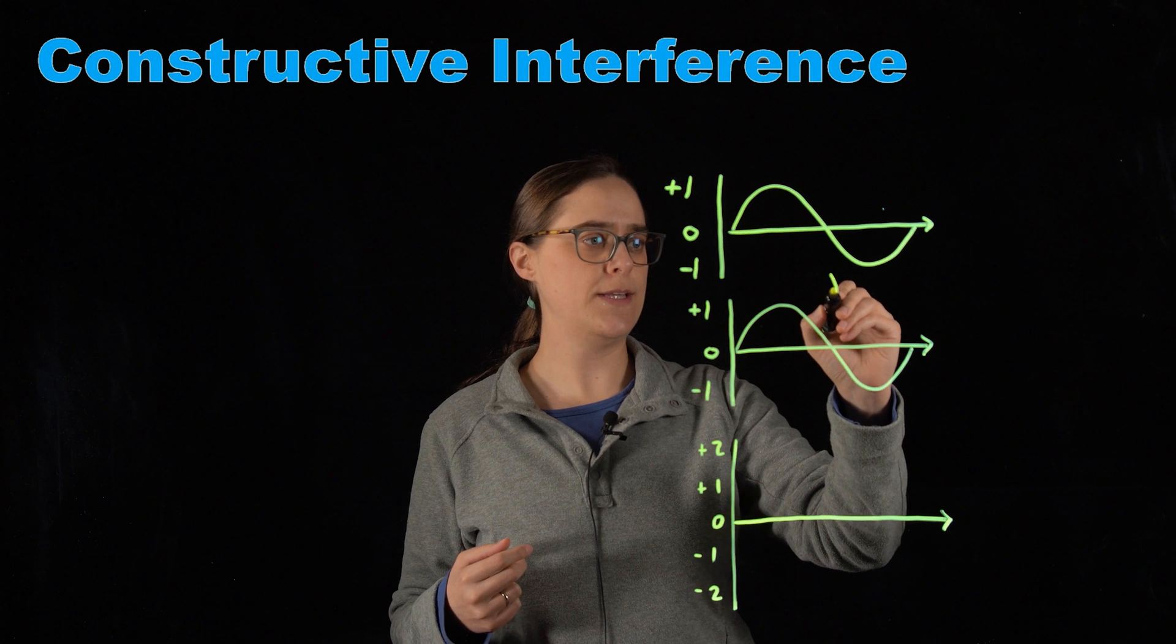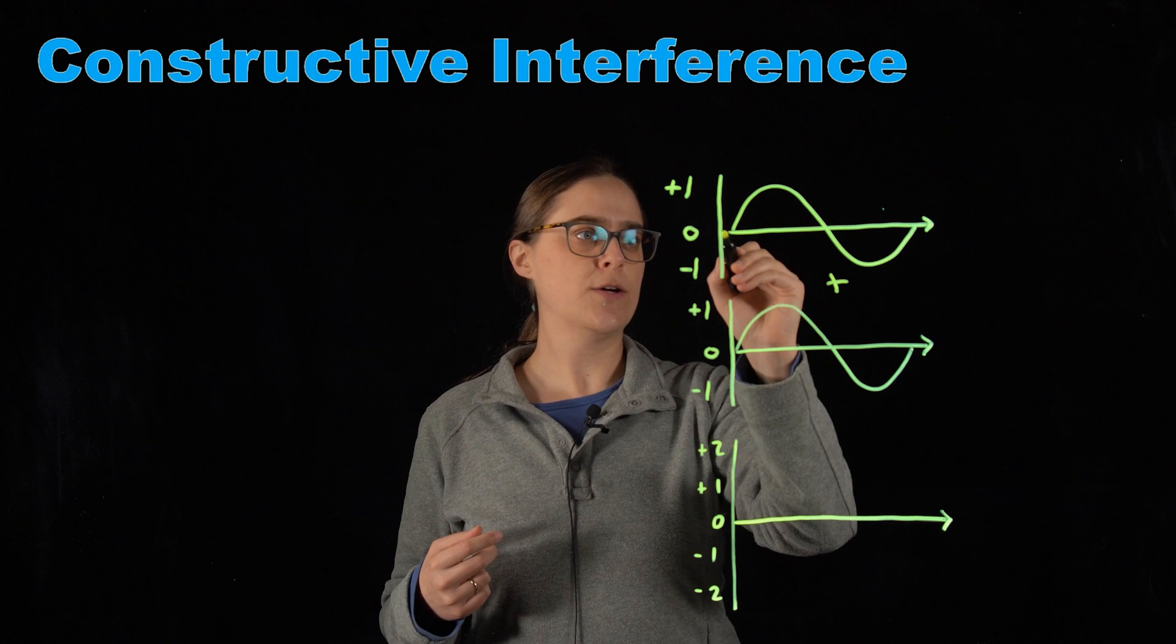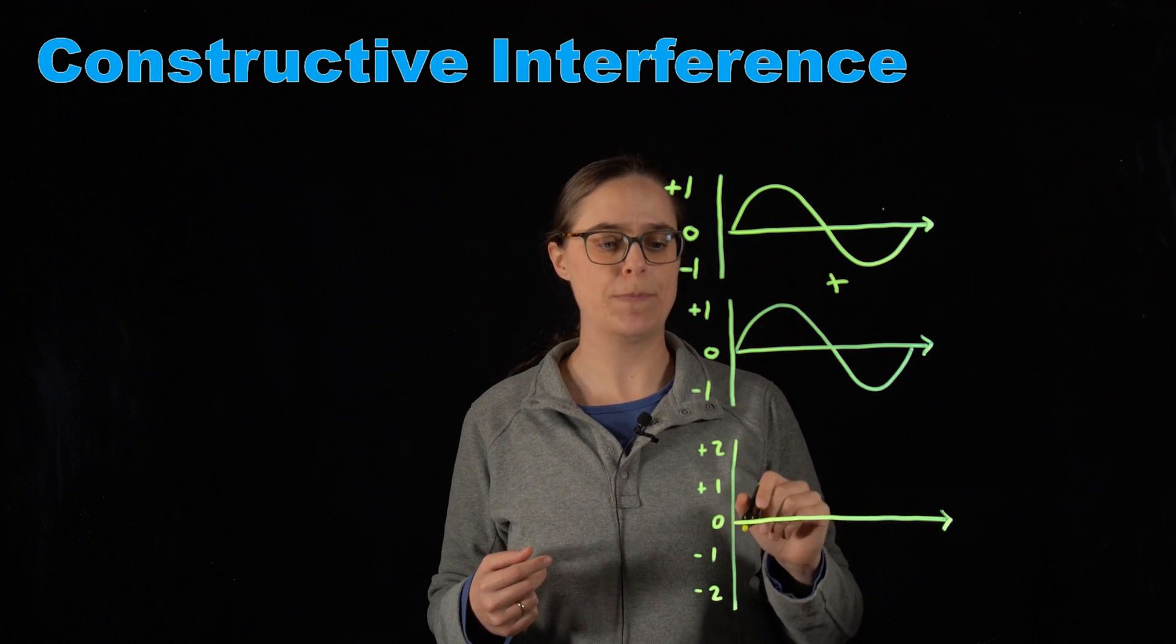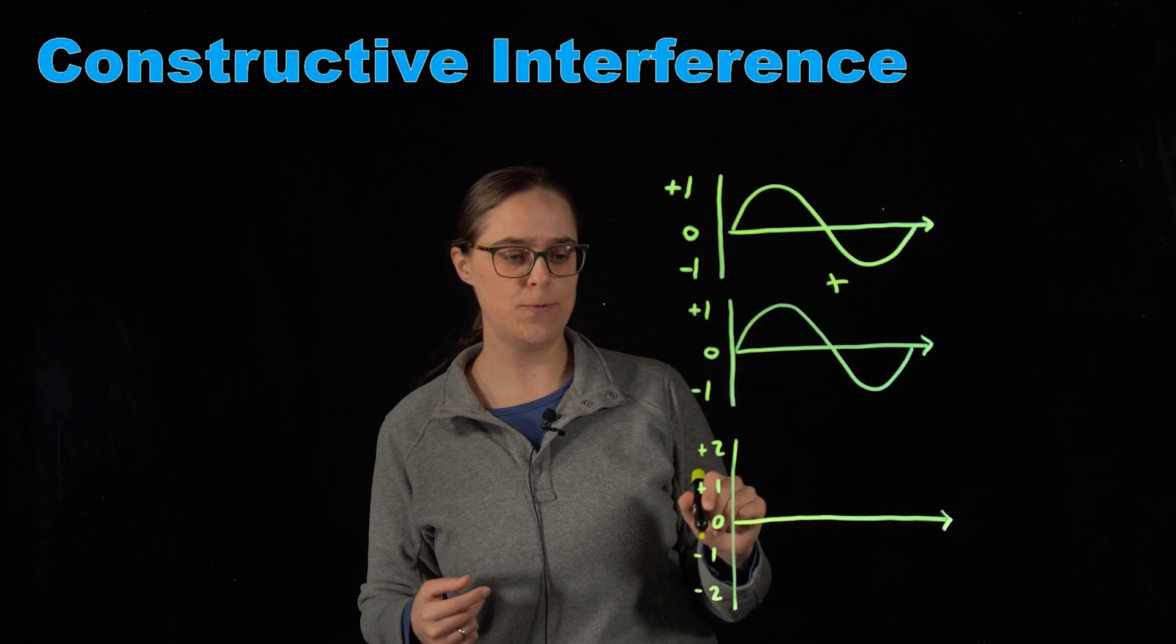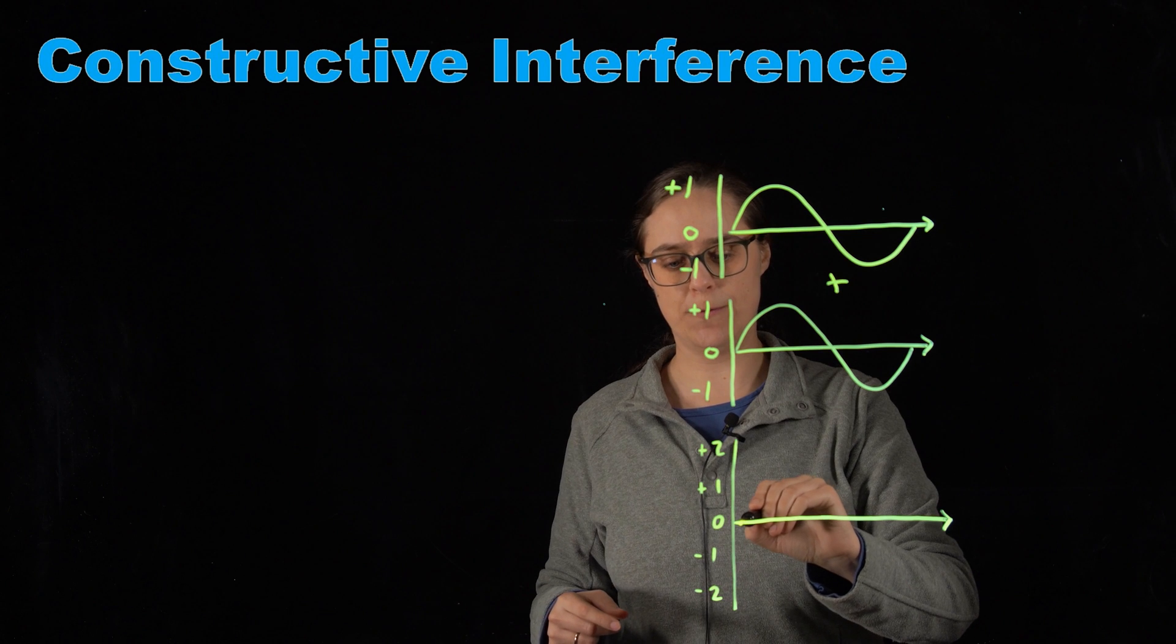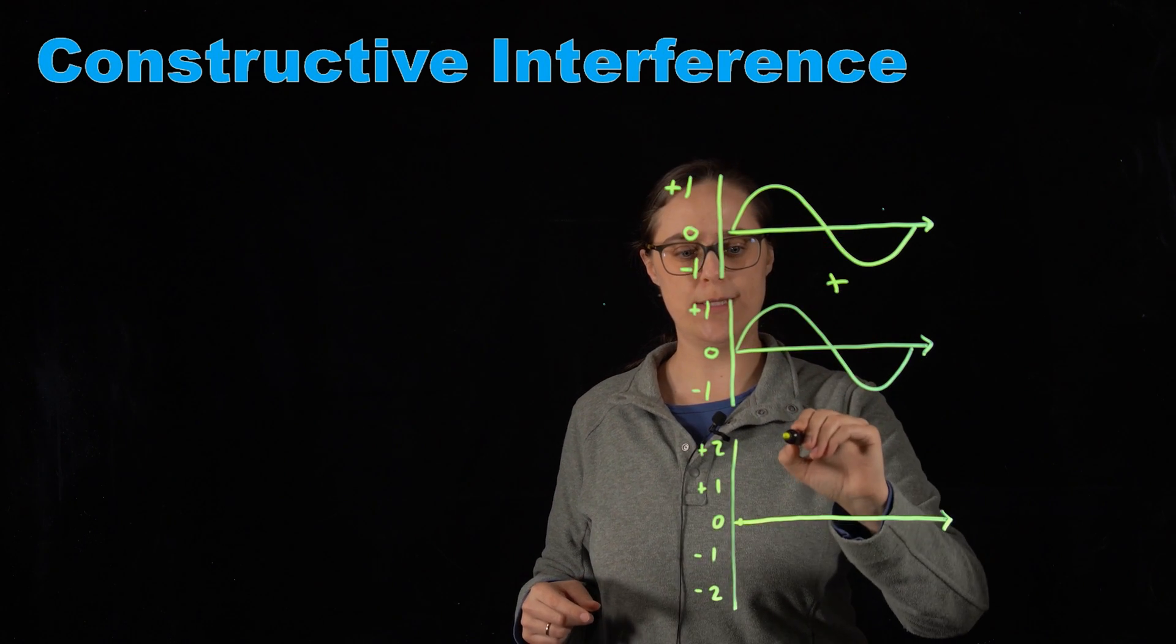So I've given these y-axes where the peaks are at an amplitude of positive 1, crossing the line is at an amplitude of 0, and the valley is at negative 1. Let's add these two waves together. So at the very beginning we have 0 plus 0 equals 0, and at this peak we have 1 plus 1 equals 2.